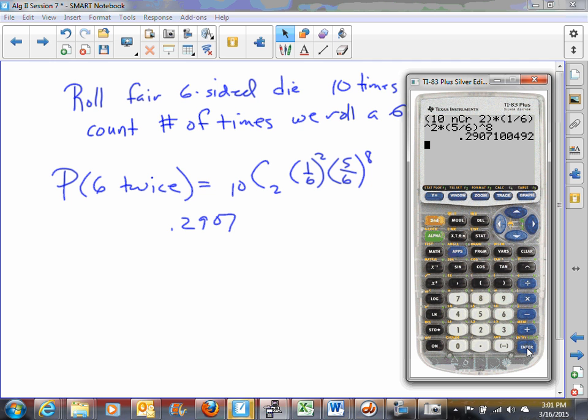So if we wanted to, we could actually get the probabilities for all of these occurring, zero through ten. And the way we would do that is let's just go into y1, and in y1 we're going to put in a function here. So we're going to put in a function here for 10 choose x times one-sixth raised to the x times five-sixths raised to the ten minus x. Now if we set our table to start at zero with a change in table one and then set second table...